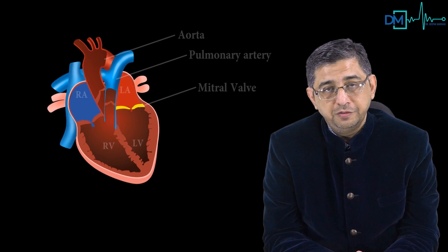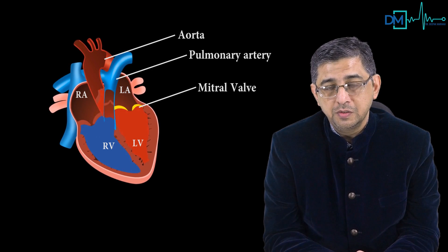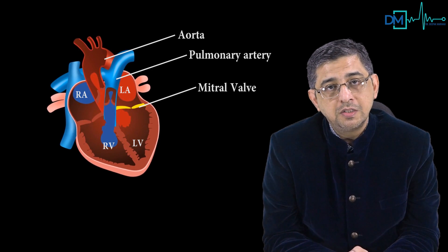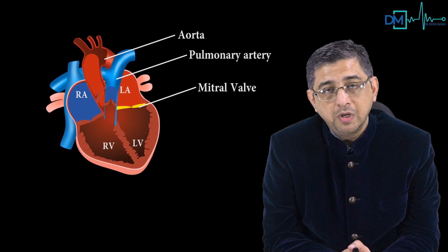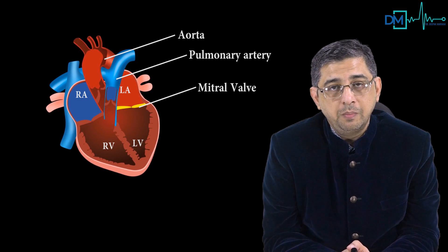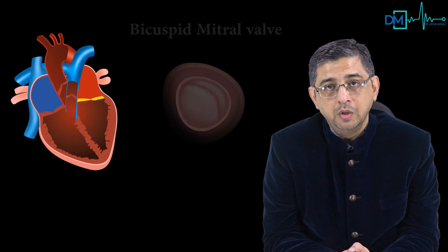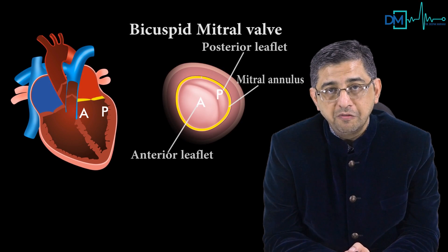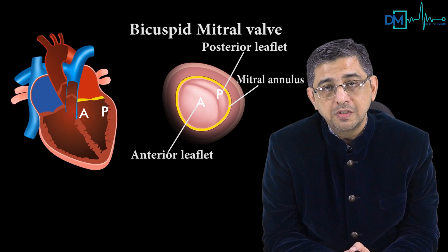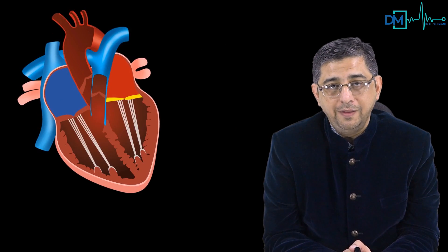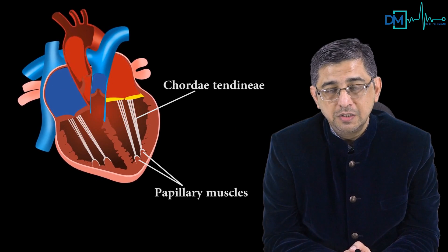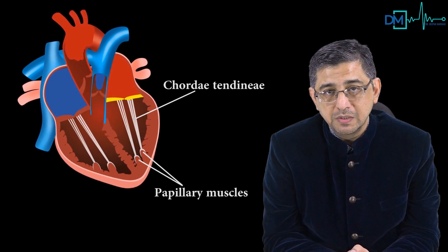During the phase of systole, when the left ventricle generates tremendous pressure causing blood to rush into the aorta, there is a lot of pressure on the mitral valve leaflets. The bicuspid mitral valve retains its position thanks to two structures: the chordae tendineae attached on the undersurface of the valves, and the papillary muscles.